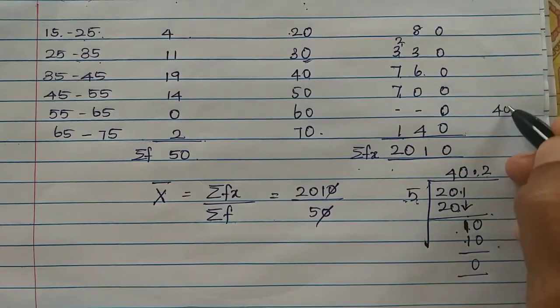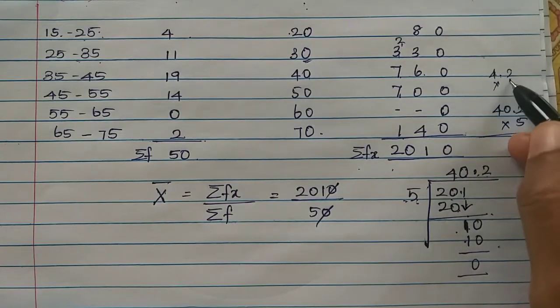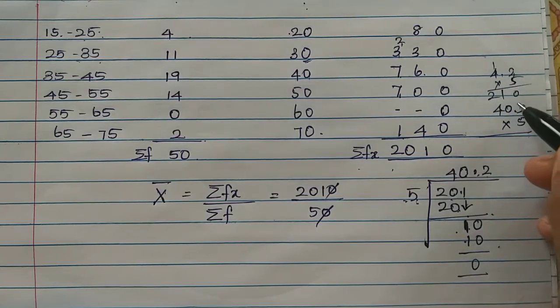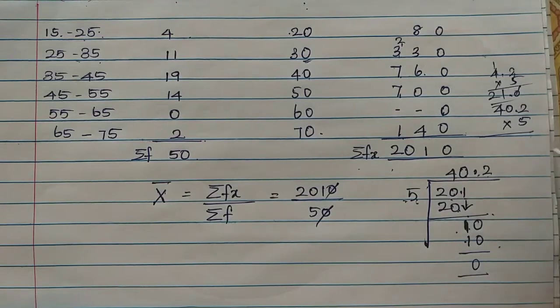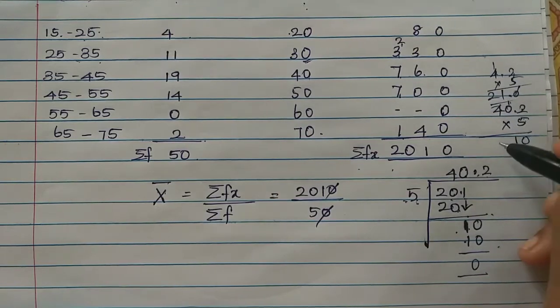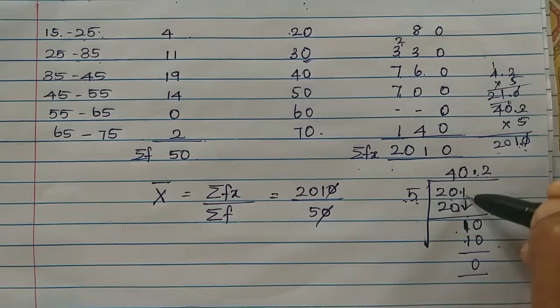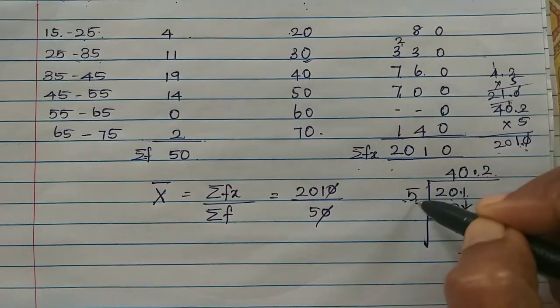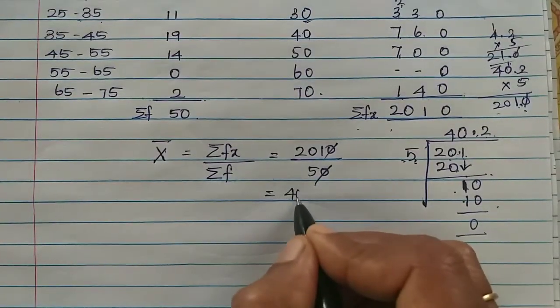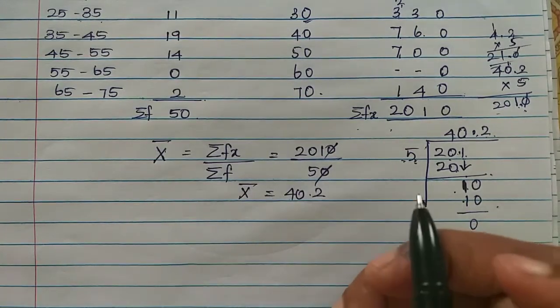So we get 40.2. This is the mean of their marks. That's all.